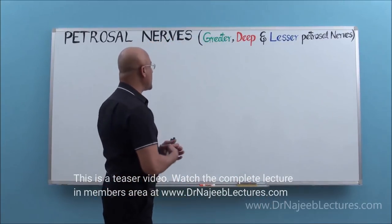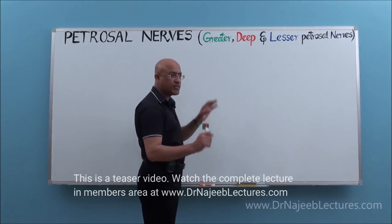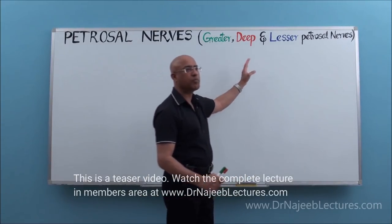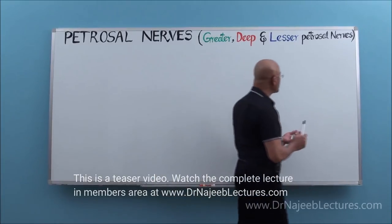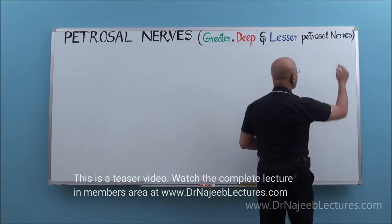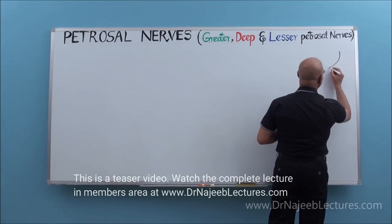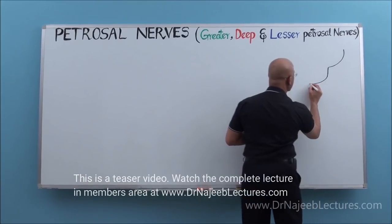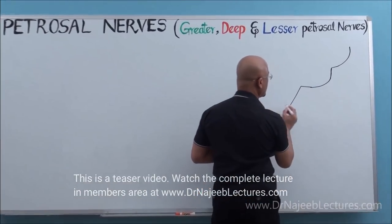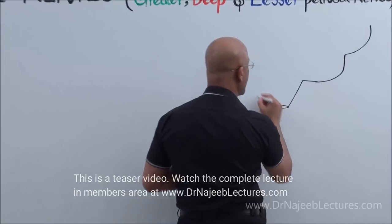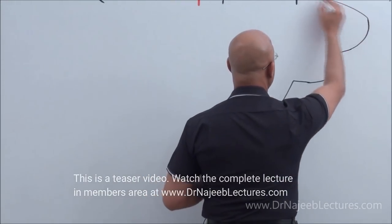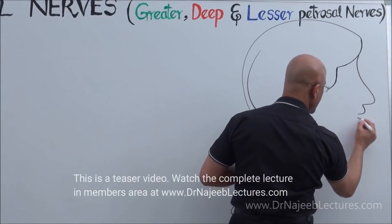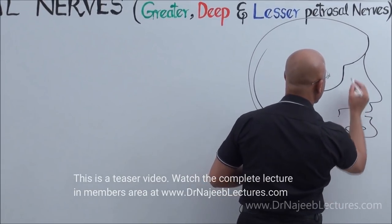Let's draw some diagrams, and then I will discuss all these nerves one by one, and in the end I will compare and contrast. First I will make a small diagram showing the anterior cranial fossa, the middle cranial fossa, and the posterior cranial fossa.